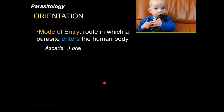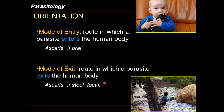In the life cycle, it is also important to understand the mode of entry and mode of exit of parasites. The mode of entry is the route by which the parasite enters the human body. For Ascaris, entry is through the oral route and exit is through the fecal route, making it a fecal-oral transmission.